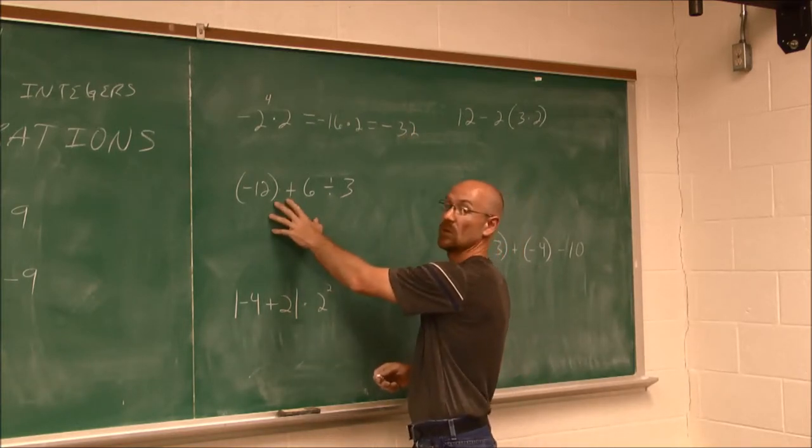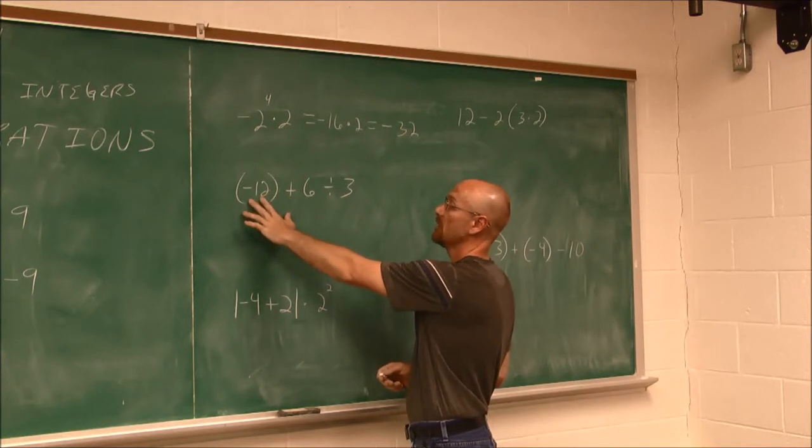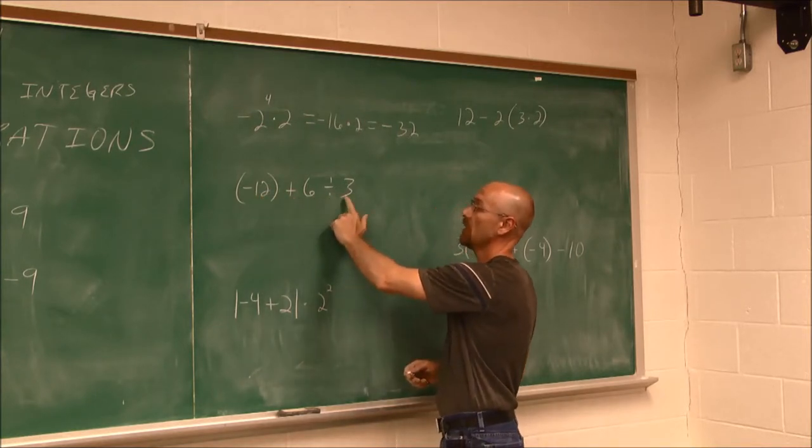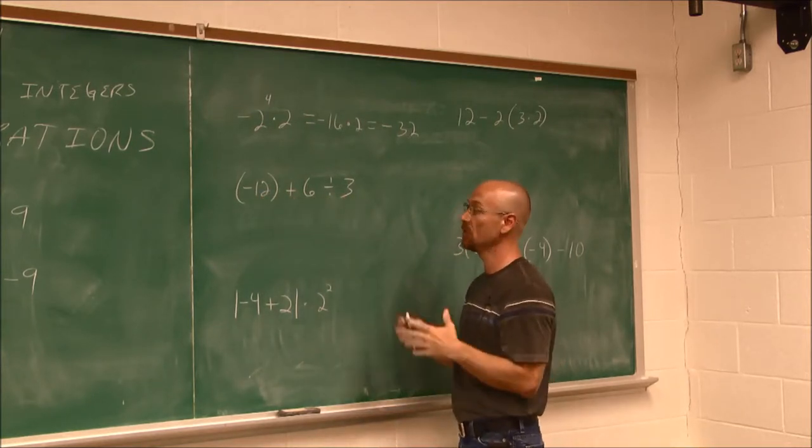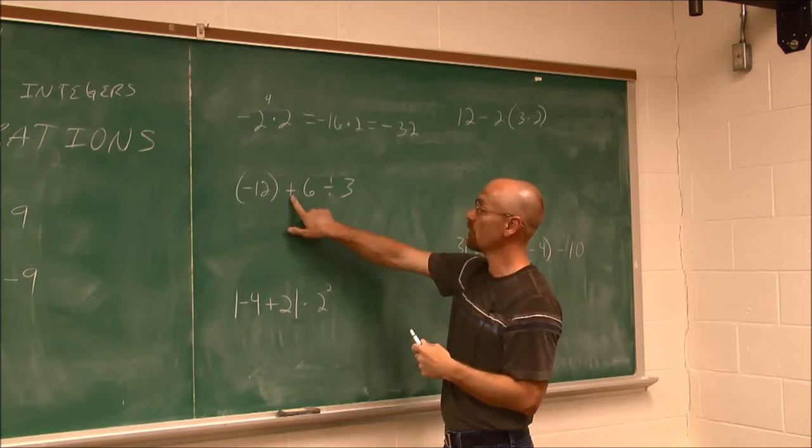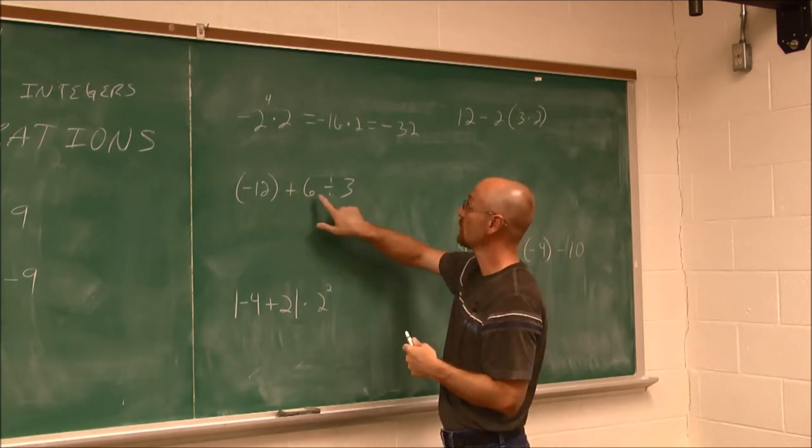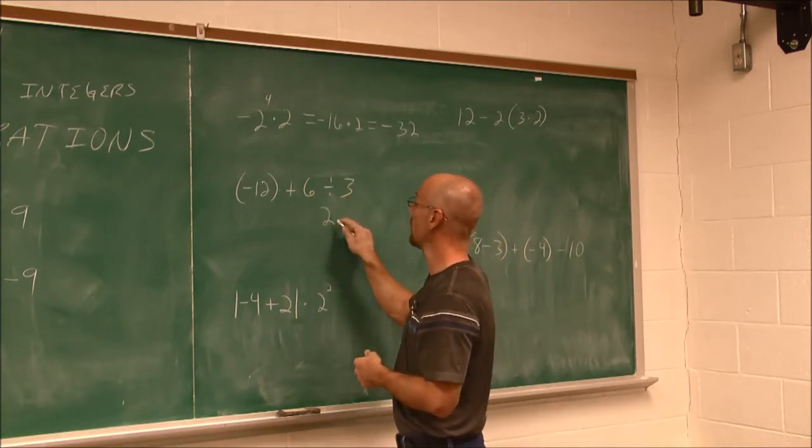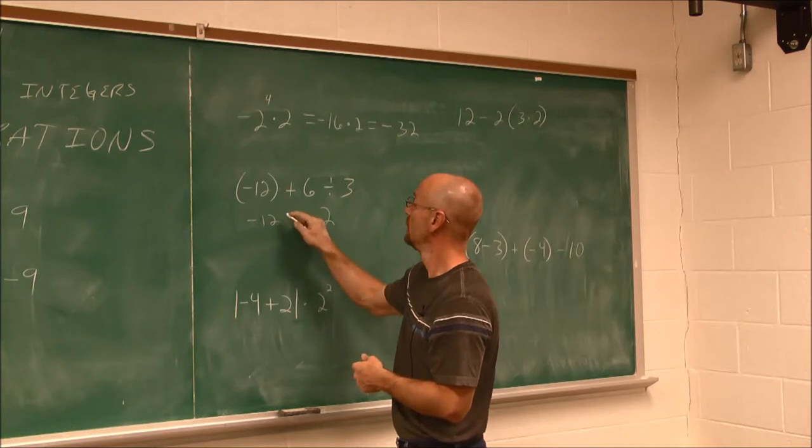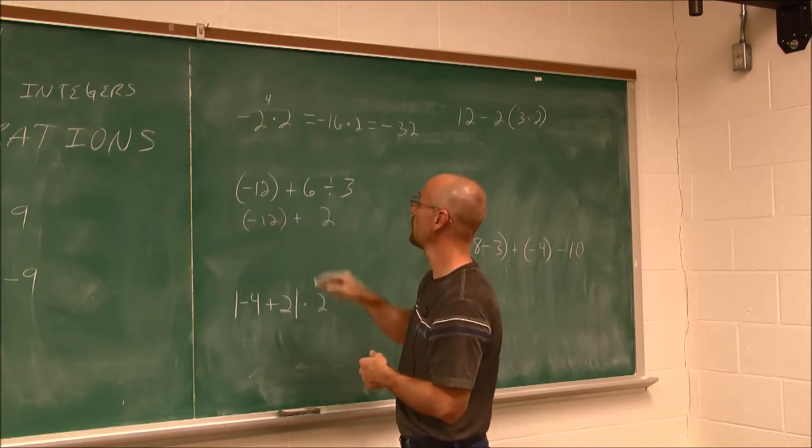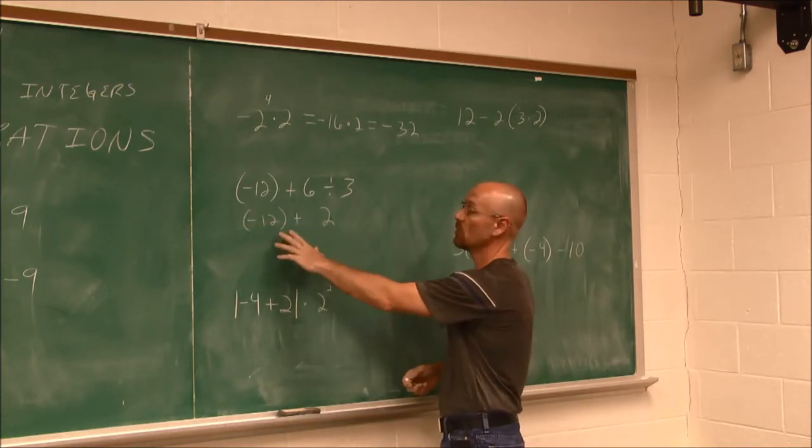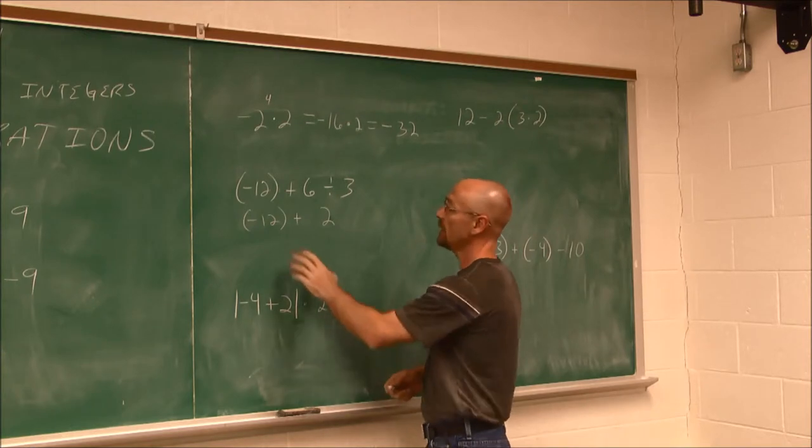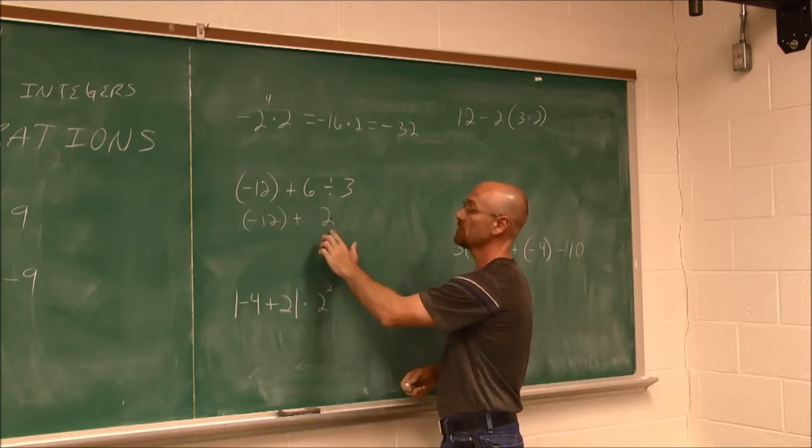Here, if we follow order of operations, we have the integer of negative 12 plus 6 divided by 3. Order of operations say we do any multiplication or division before we do any addition. So we do this division first. 6 divided by 3 is 2, so I'm going to write it right here. And I can leave that in parentheses or not. I could remove the parentheses and it won't change it.